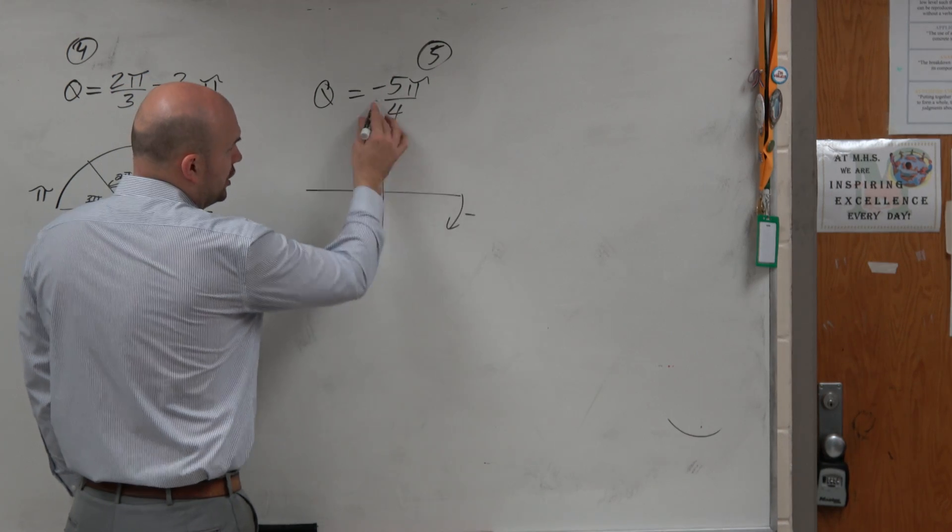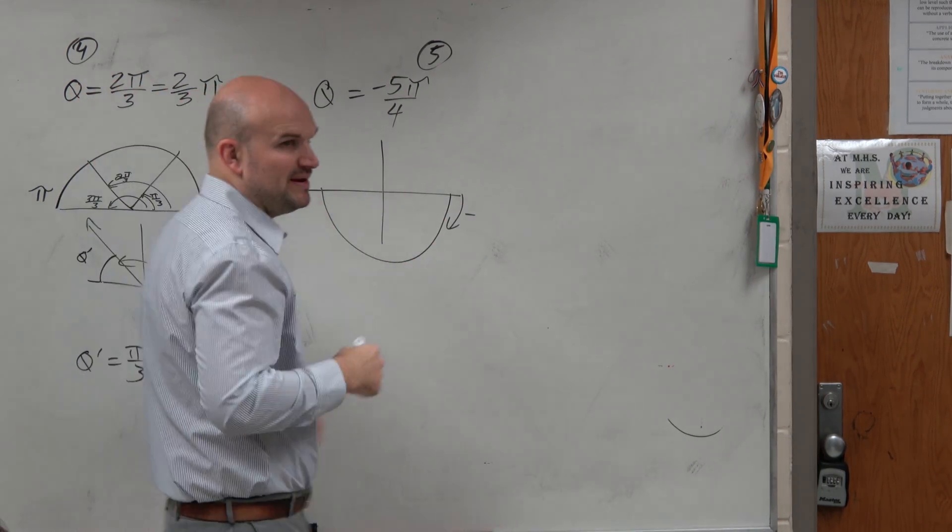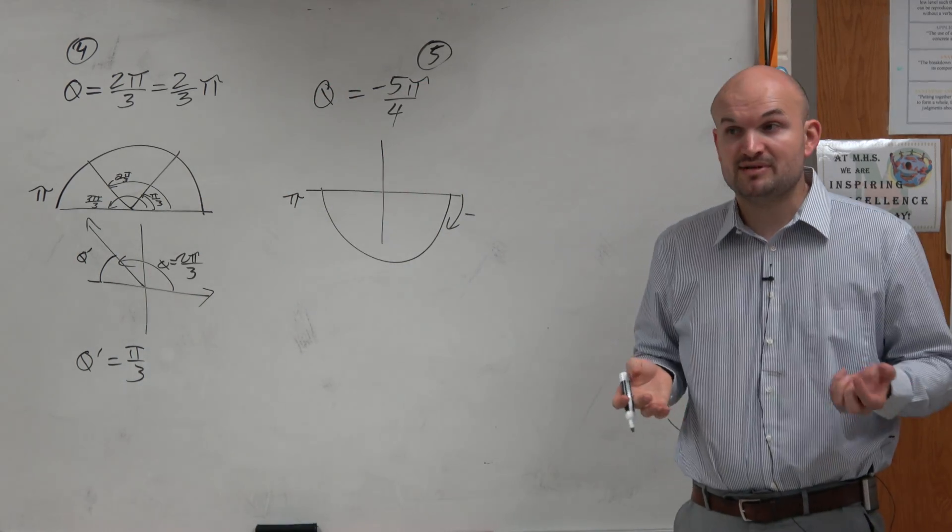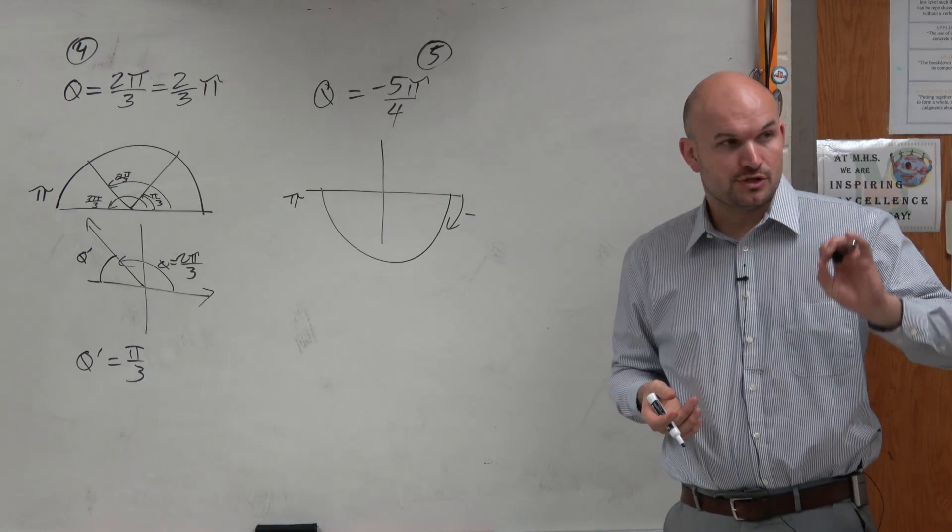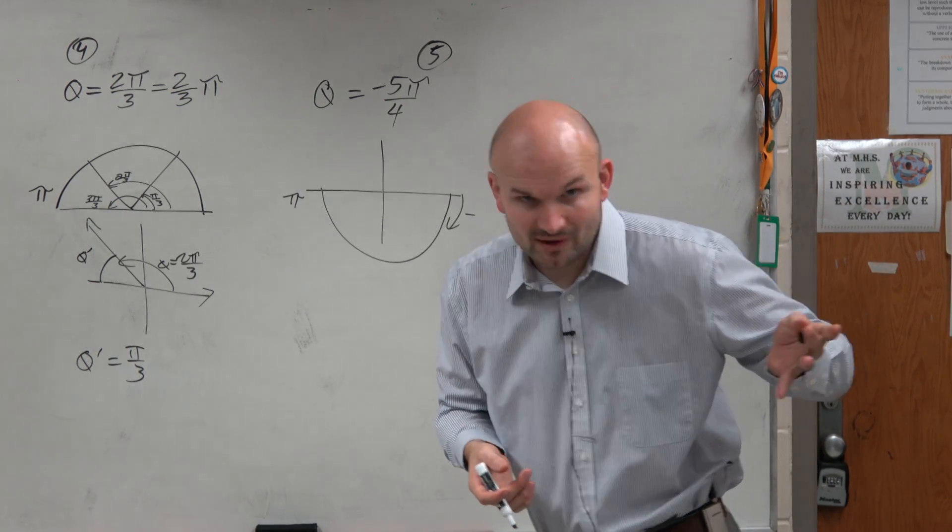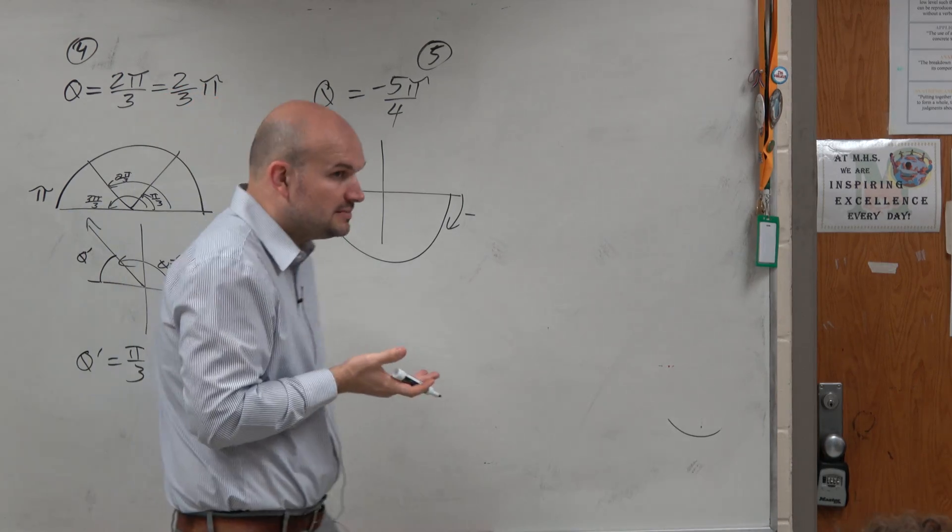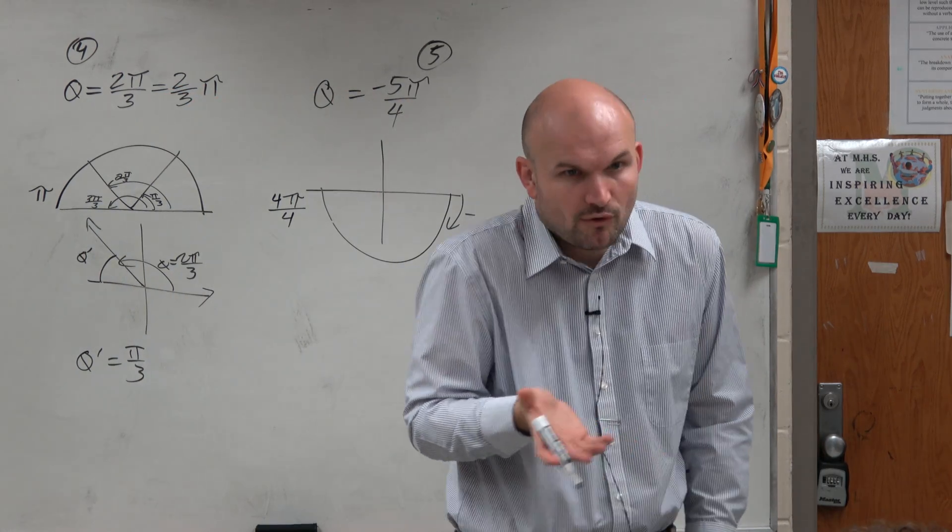And if I'm going to go from here to here, I know it's π. But based on what I explained in the last example, we could also represent that in terms of fourths. So π is how many fourths? Yes, four fourths. 4π over 4 is still π.